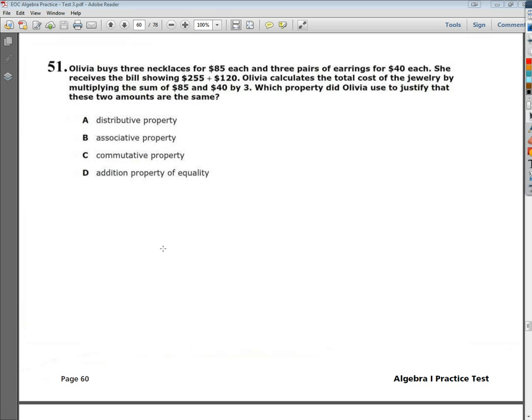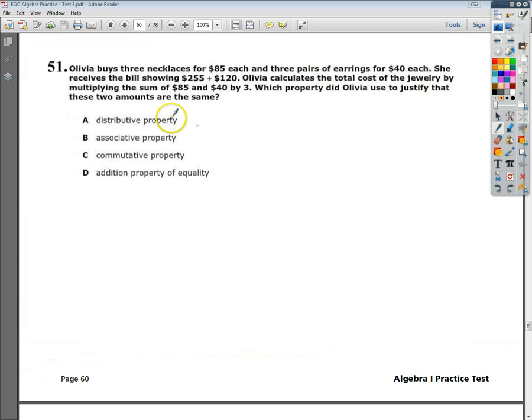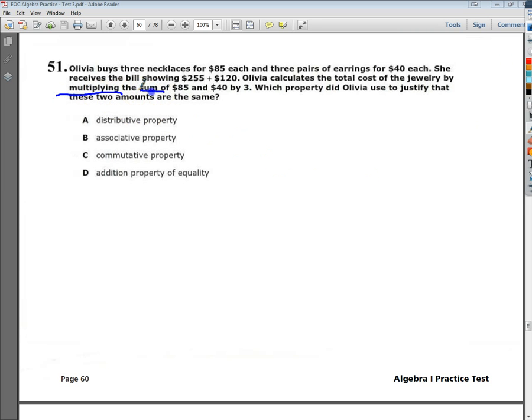Olivia calculates the total cost of the jewelry by multiplying the sum, so that's important, multiplying the sum of 85 and 40 by 3. Which property did Olivia use to justify that these two amounts are the same?